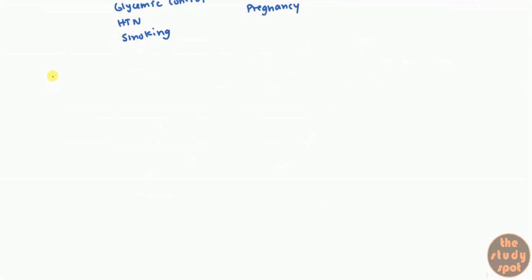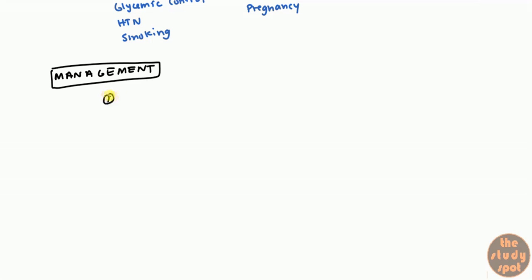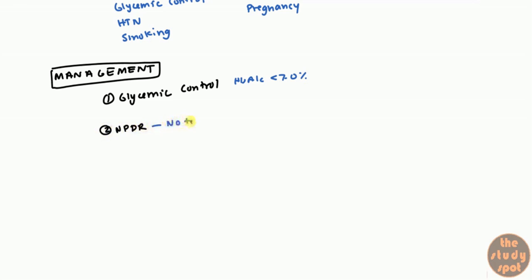How would you manage a patient with diabetic retinopathy? Just like most complications of diabetes, the first step is good glycemic control — generally you want to keep the HbA1c less than 7% with a few exceptions. In non-proliferative diabetic retinopathy, there's no real treatment unless it's pretty severe. In general for non-proliferative, you just monitor the patient, get better glycemic control, and monitor to see when it becomes proliferative.